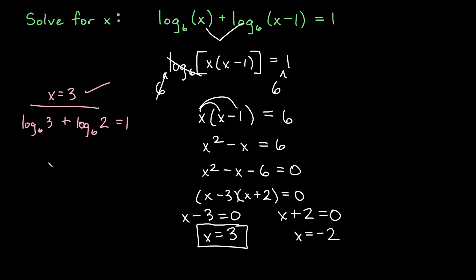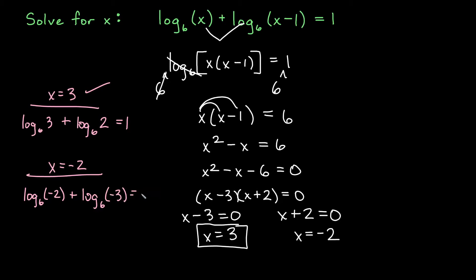Plugging in x equals negative 2 into the original gives log base 6 of negative 2 plus log base 6 of negative 3 equals 1. We can't take a log of a negative, so we actually have two problems here. This is not a good solution — it doesn't check out. Therefore x equals 3 is our only actual solution for this first problem.